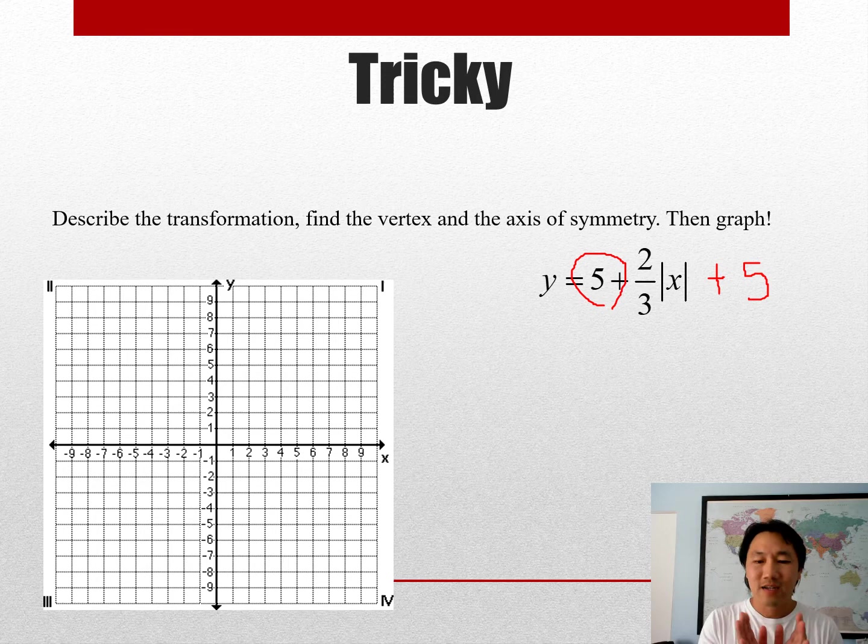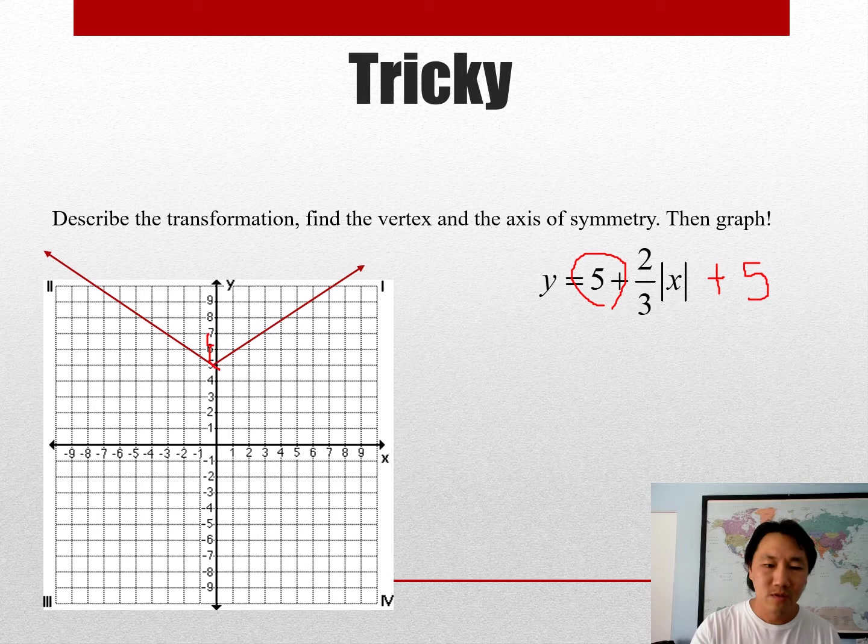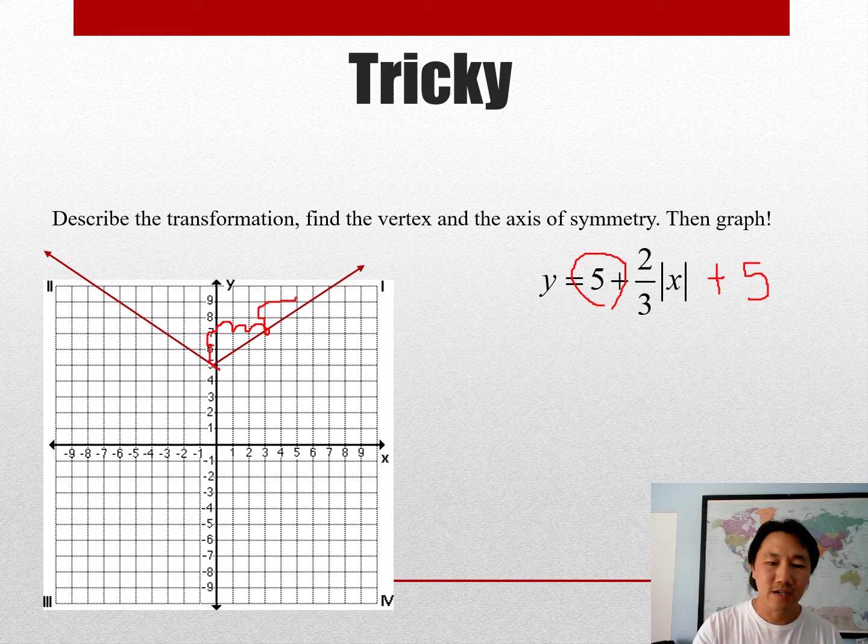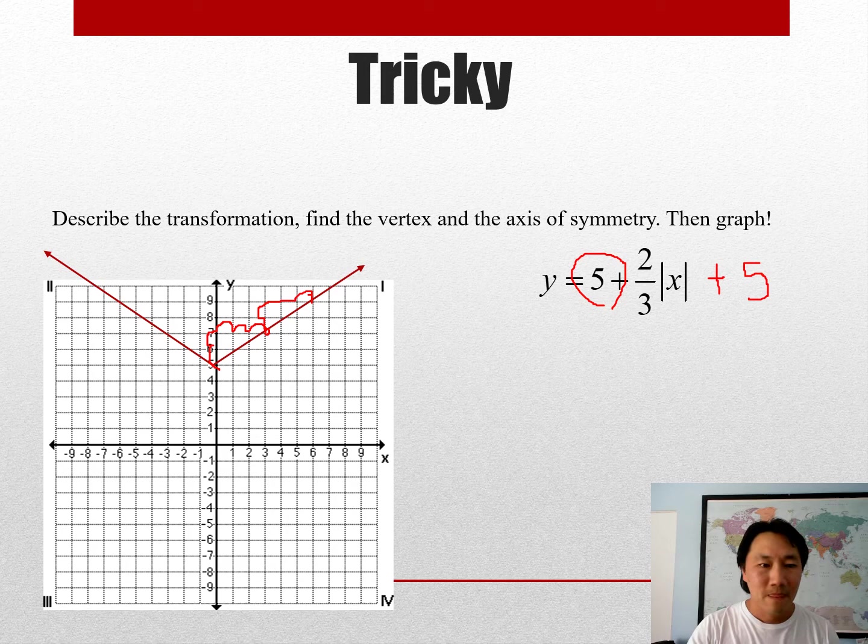But it shouldn't. It just means that the whole graph is moved five units up, and then it's still a V going up with a slope of two over three. And there it is. It goes up five units and then up two over three, up two over three in both directions. All right, so the only trick is sometimes that five can move to the front and that doesn't change anything.